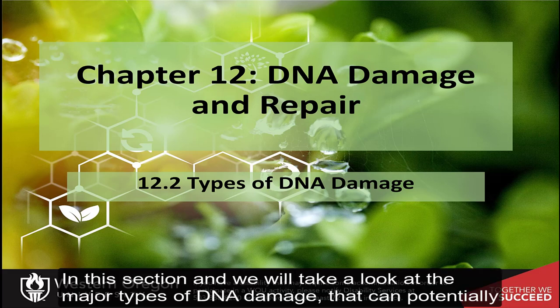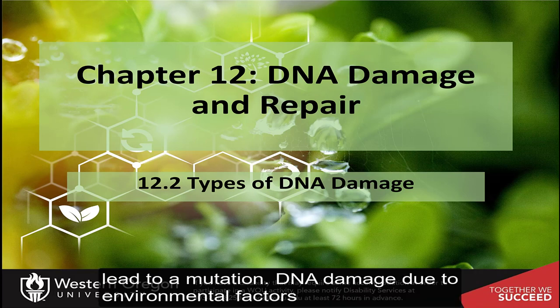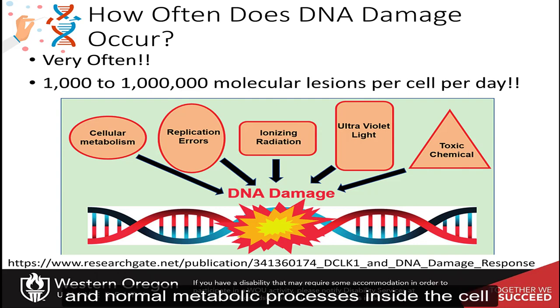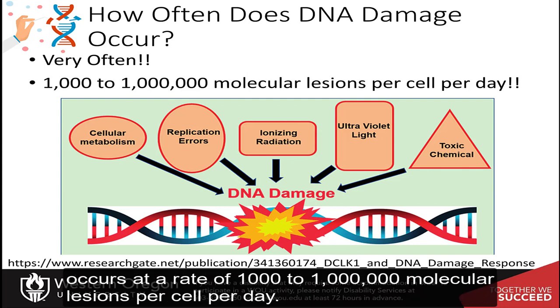In this section, we will take a look at the major types of DNA damage that can potentially lead to a mutation. DNA damage due to environmental factors and normal metabolic processes inside the cell occurs at a rate of 1,000 to 1,000,000 molecular lesions per cell per day.